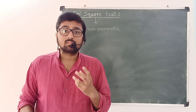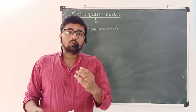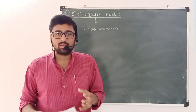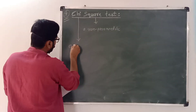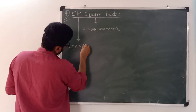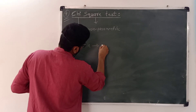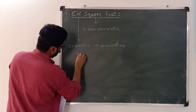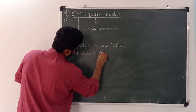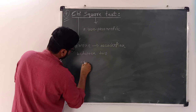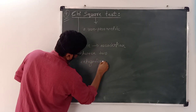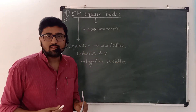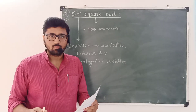When is the chi-squared test useful? If we want to examine the association between two categorical or nominal variables, then the chi-squared test for independence is used.